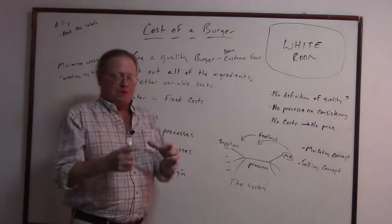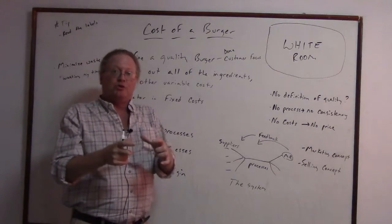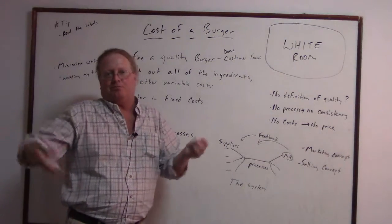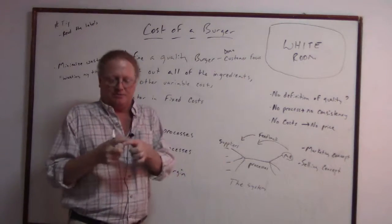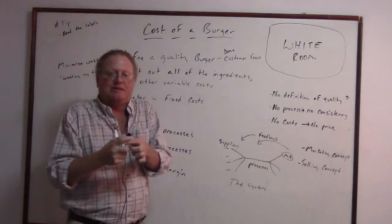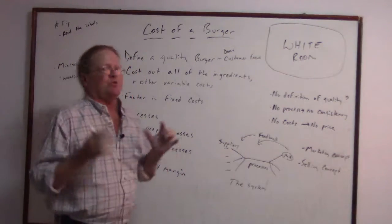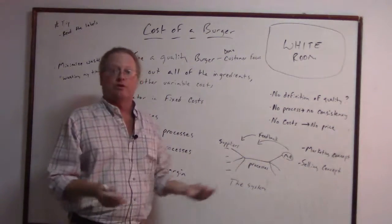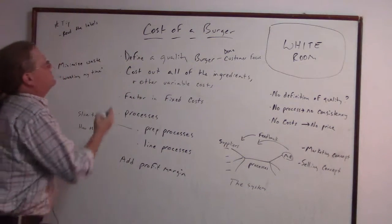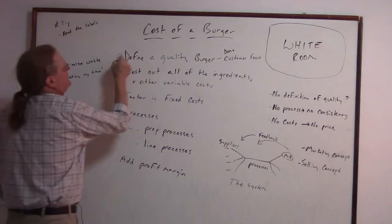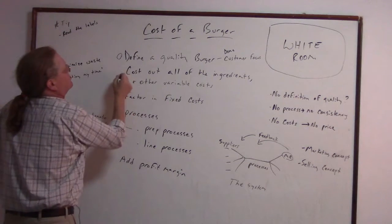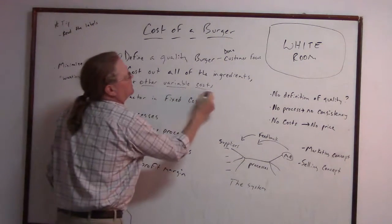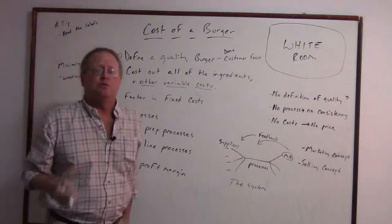Such as the bun — suppliers like to make the buns real big, and then if you go to the store and get a pack of beef patties, they're this tiny little thing. So the ratio of the bun to the meat is all off. Where's the beef? So now you're going to have to cost out all the ingredients and other variable costs that go into the making of the burger.